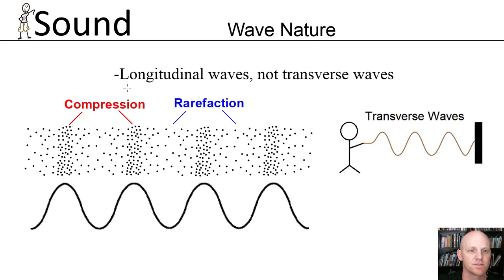It turns out there are two types of waves. Your fundamental types are called longitudinal waves and transverse waves. Sound waves are longitudinal waves. To understand what a longitudinal wave is, it might be helpful first to understand what a transverse wave is.